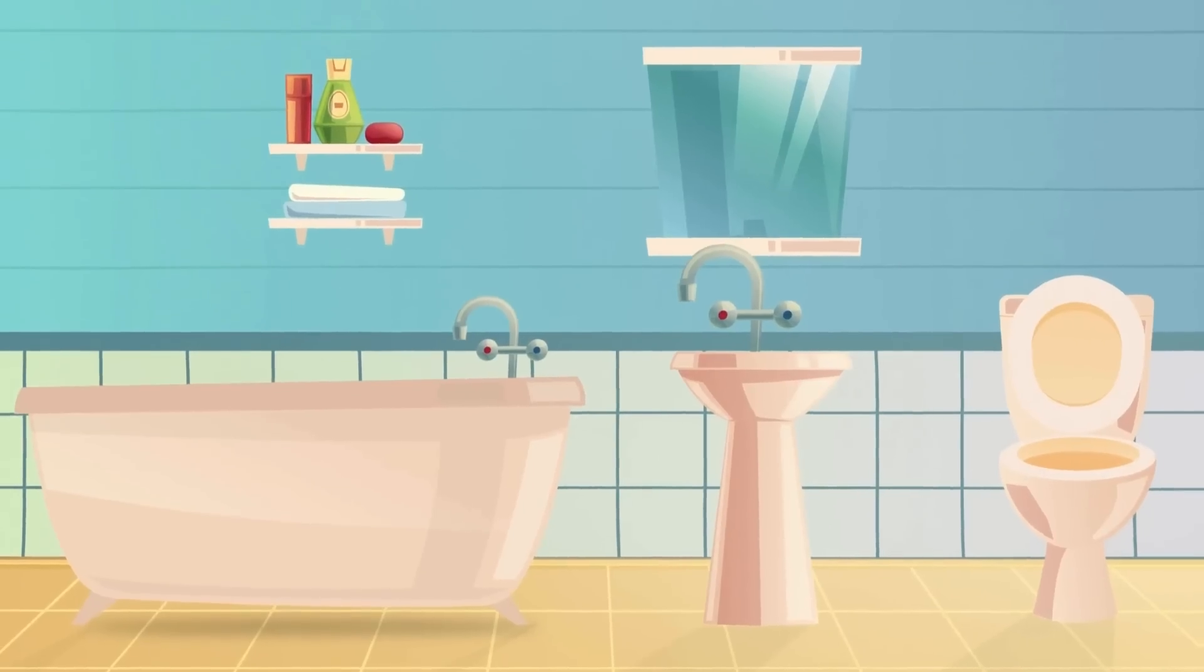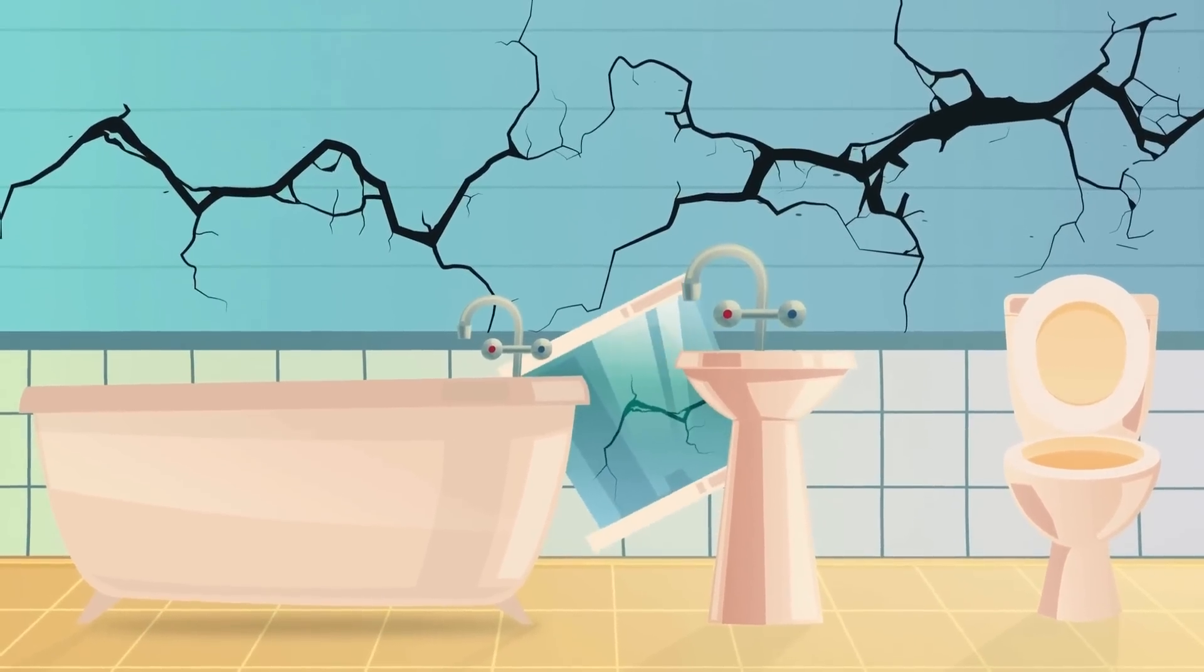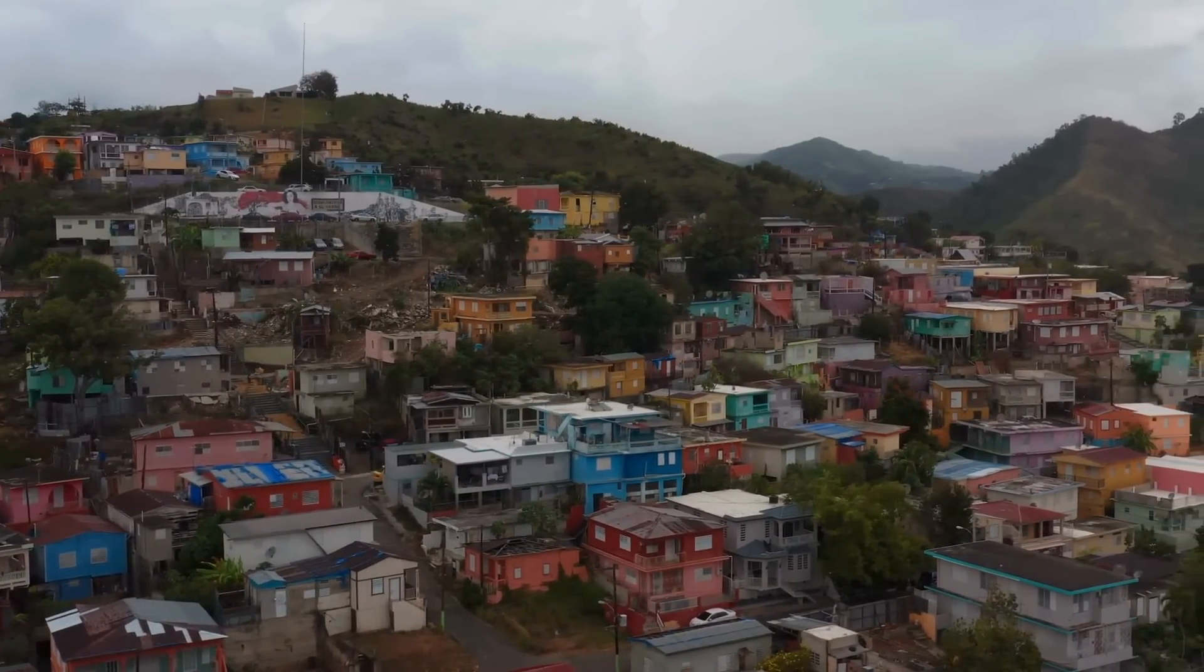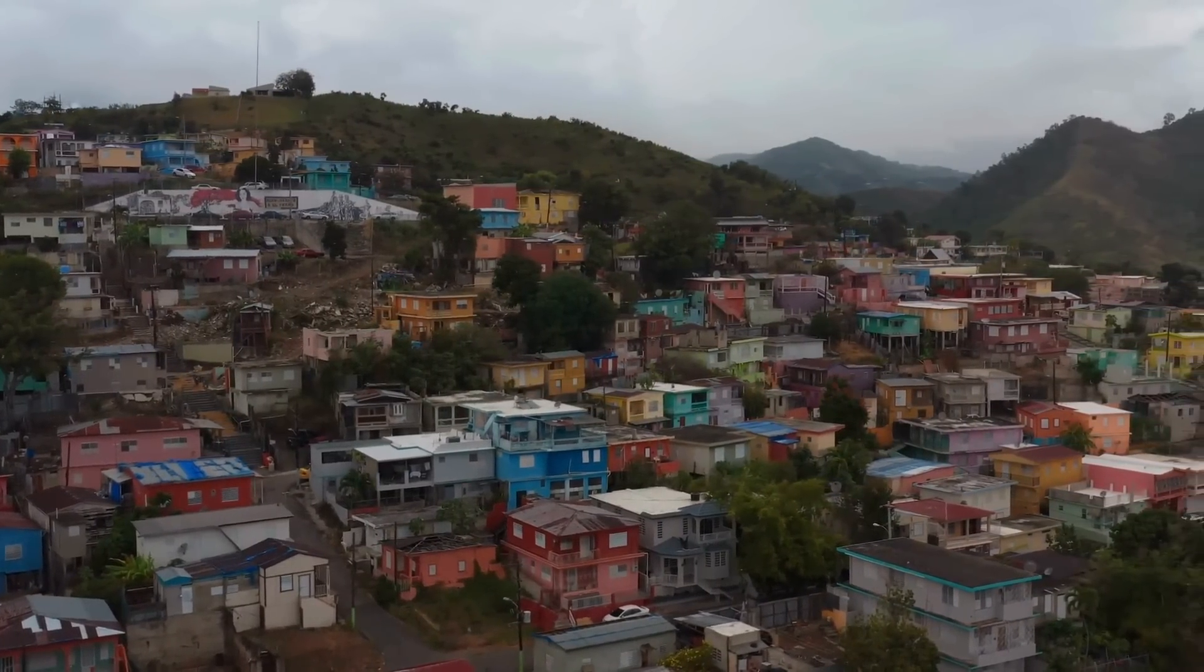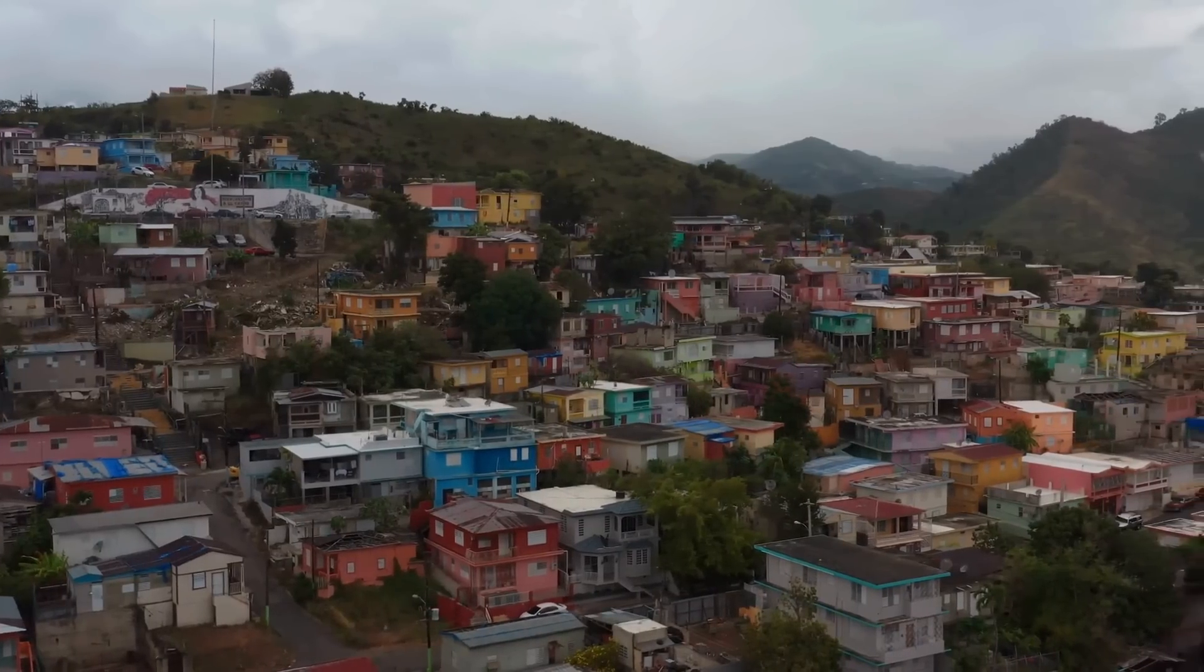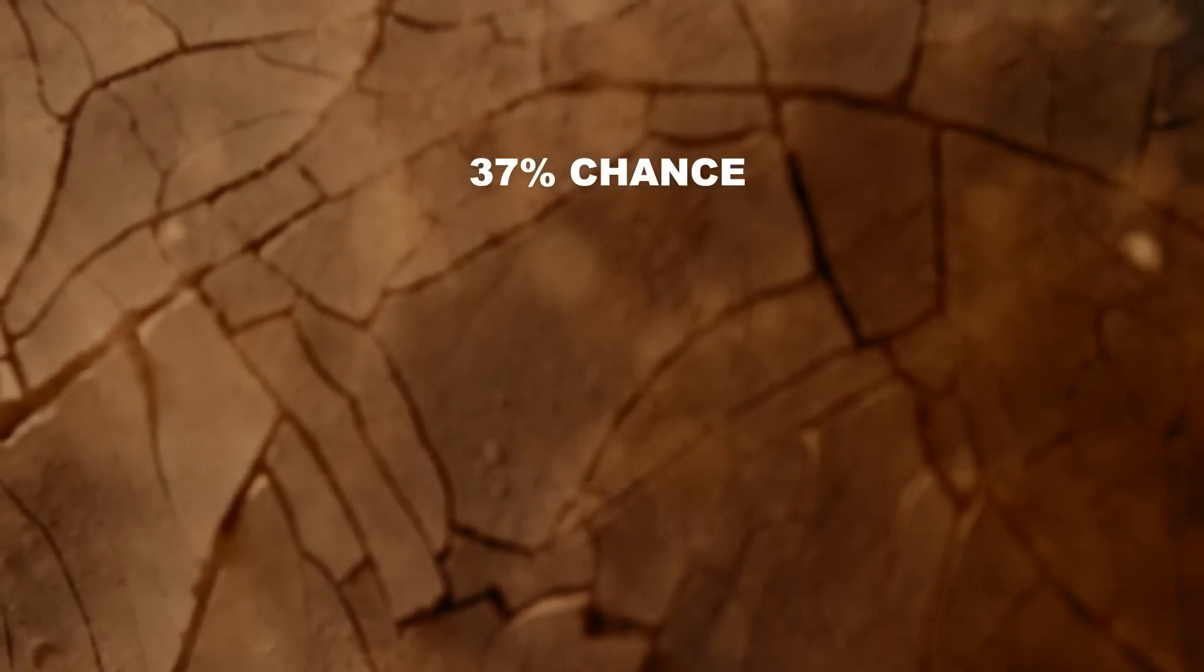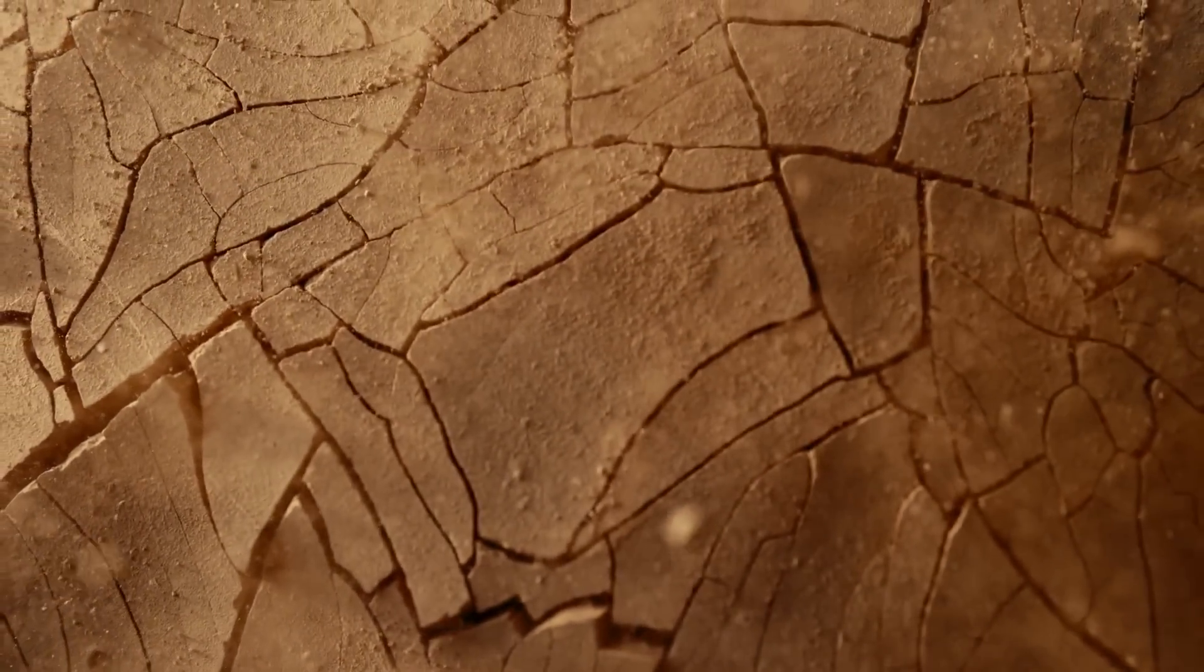In the centuries since the last known megathrust earthquake, the Cascadia subduction zone has continued to accumulate tectonic strain, raising concerns about the potential for another massive seismic event in the near future. Scientists estimate that the region has a 37% chance of experiencing a magnitude 7.1 or greater earthquake in the coming years.